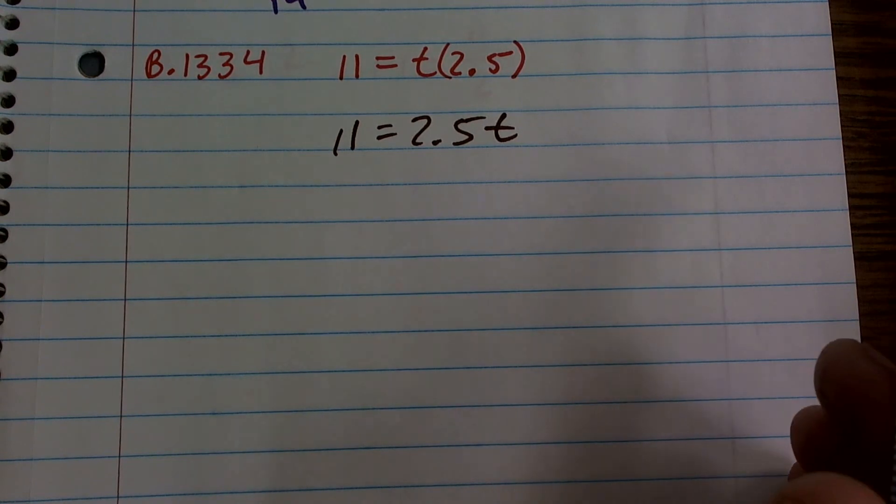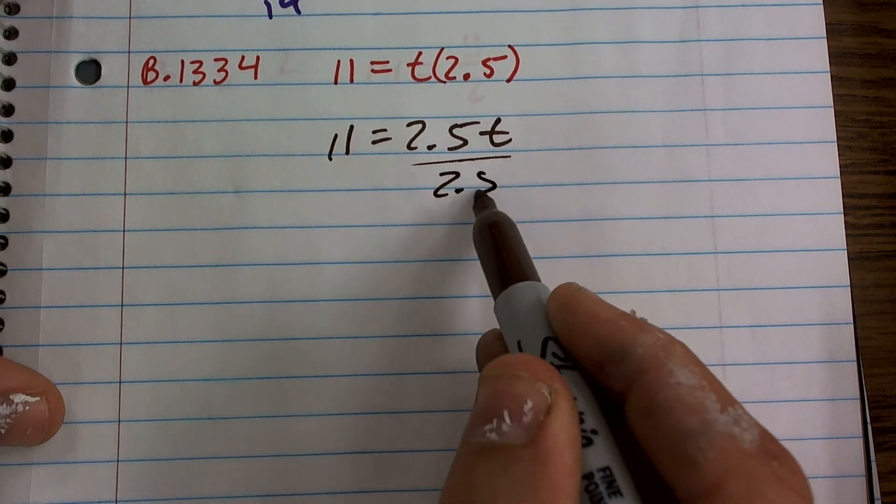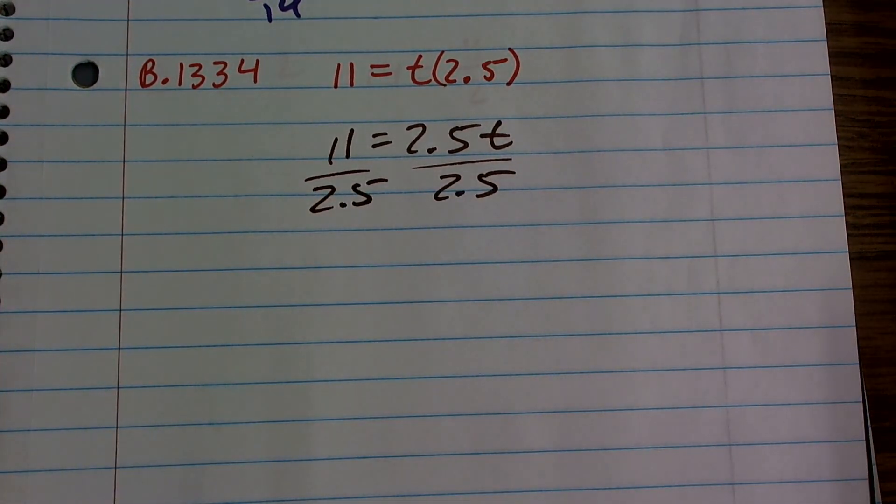Then you can see that my operation is multiplication. So to undo multiplication, I have to divide by 2.5. When you divide by 2.5 on both sides, you're using the division property of equality.